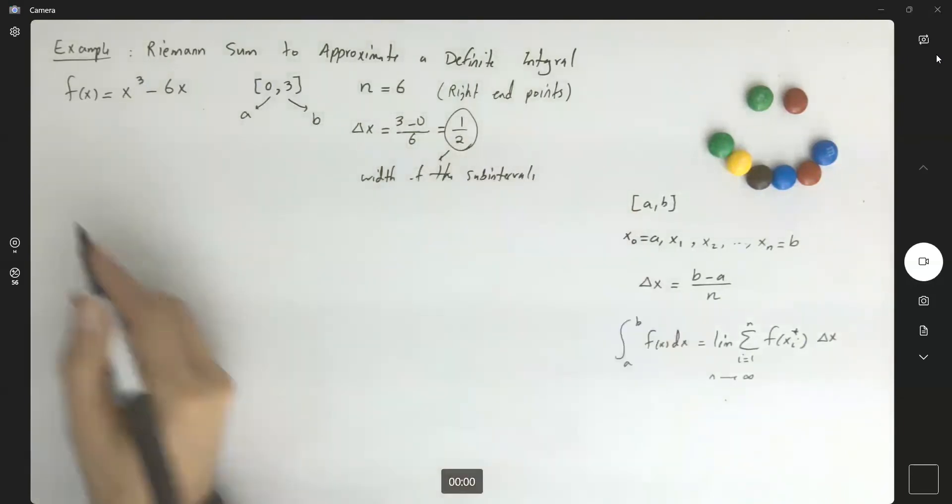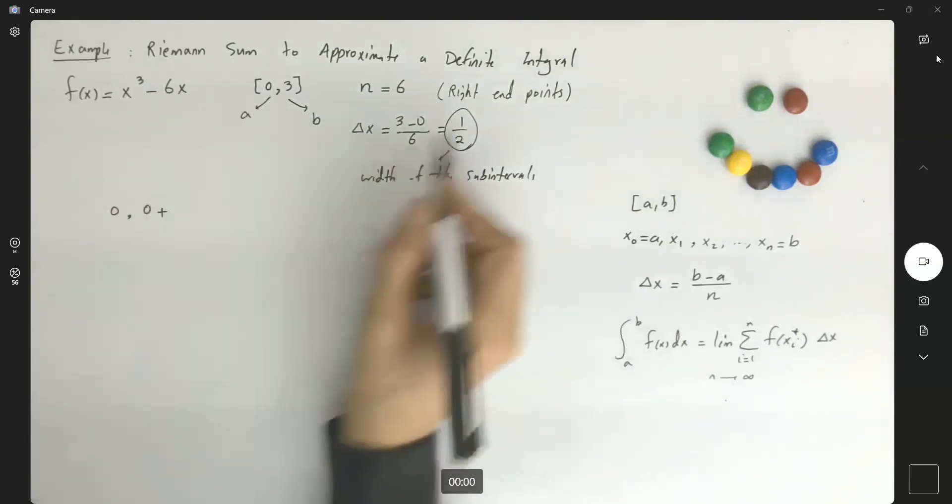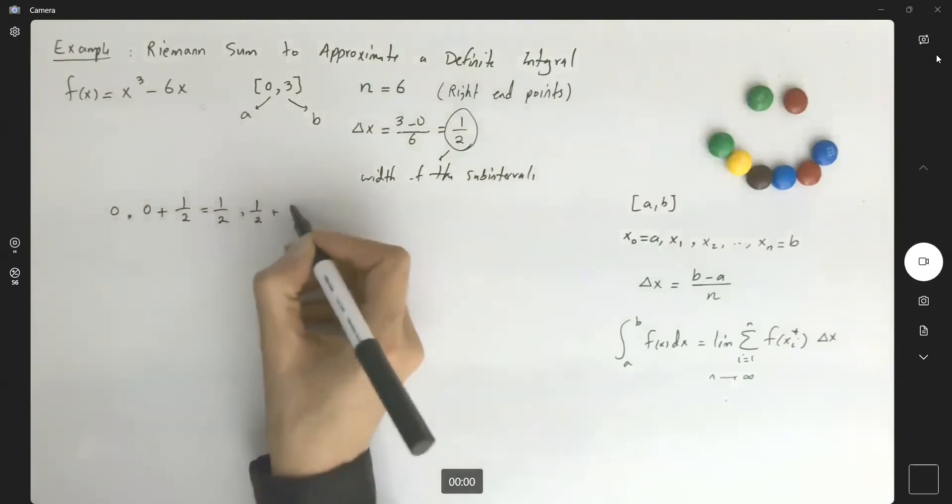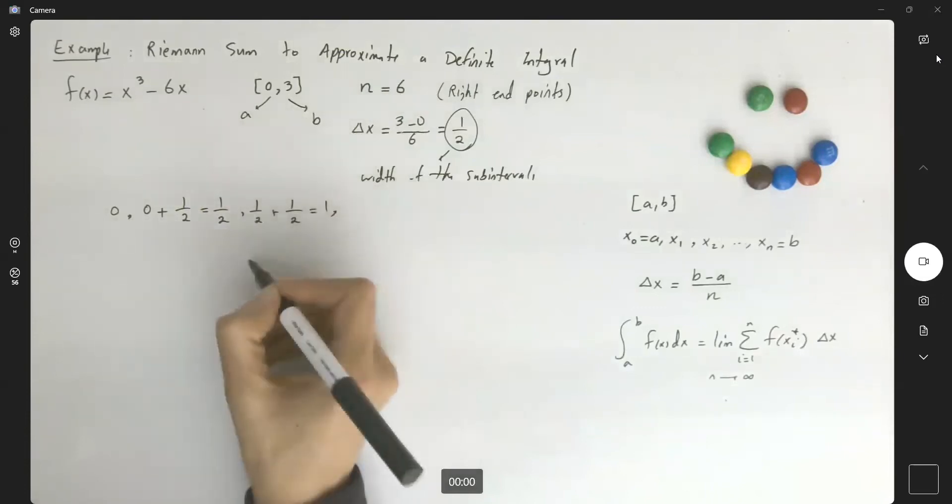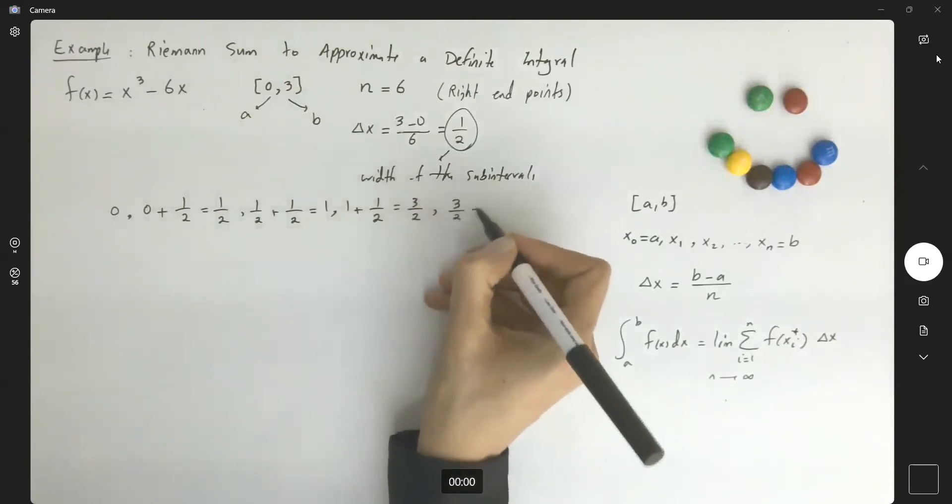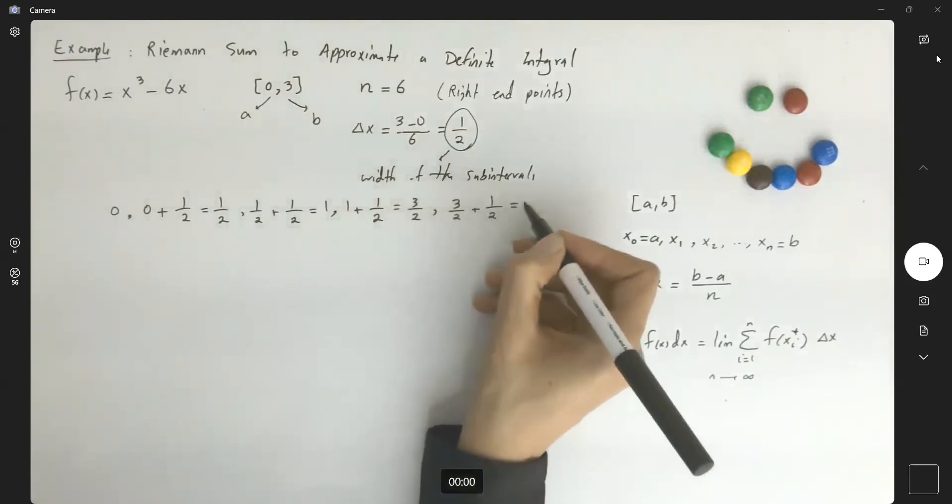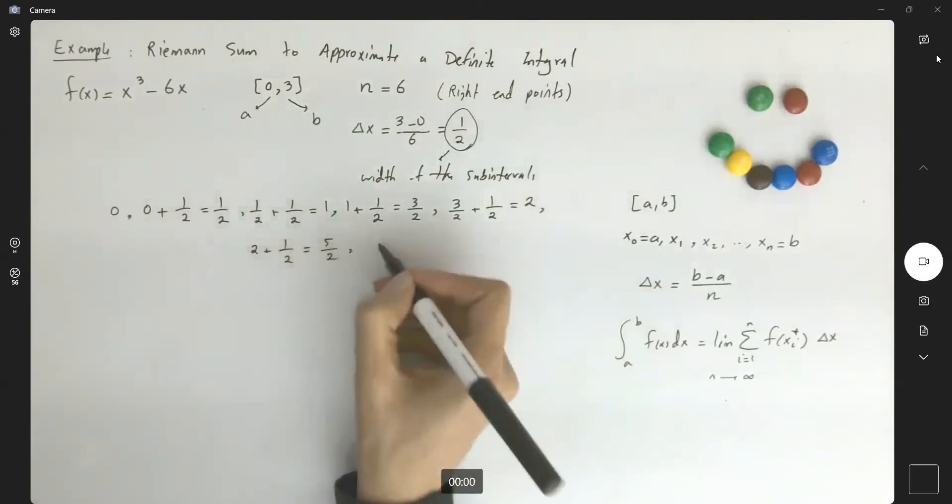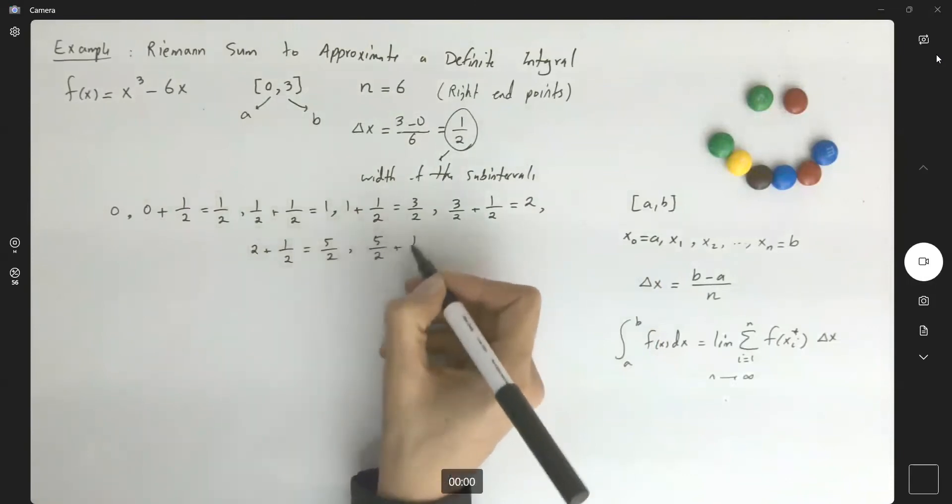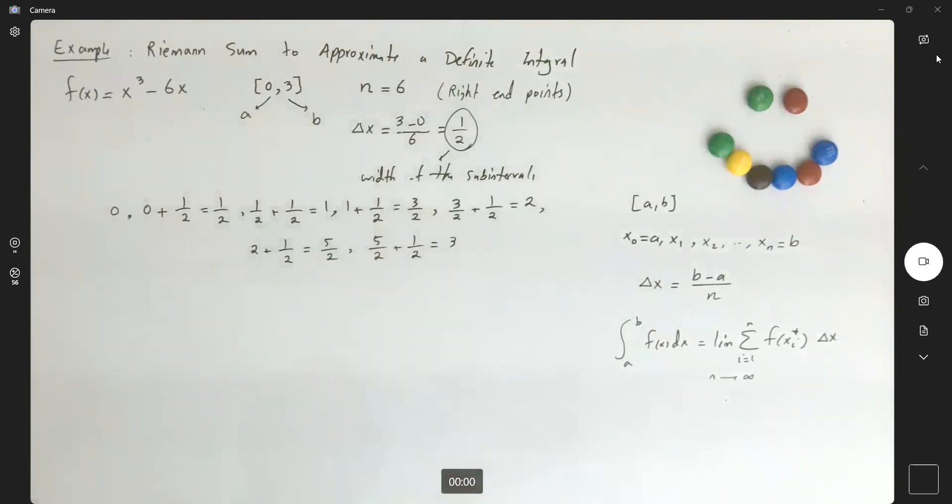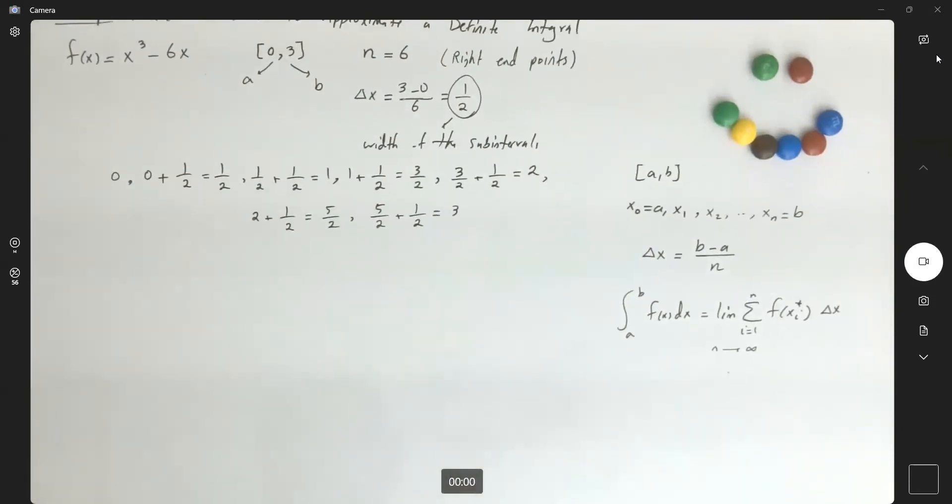So how we can apply that here. X sub 0 or a is 0. The next point is 0 plus the width a half, which is a half. The next point is a half plus the width, which is 1. The next point is 1 plus a half, three halves. The next point three halves plus a half or 2. Next point two plus a half, which is 5 halves. The next point five halves plus a half, which is 6 divided by 2, and reach to 3. So here you have these subintervals.